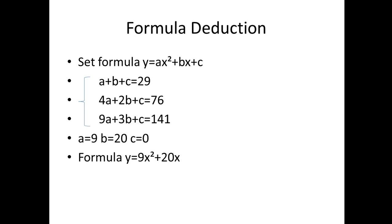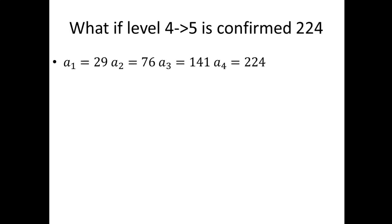If it is true that from level 4 to level 5 the amount needed is 224, then we can get four numbers.